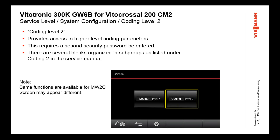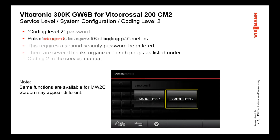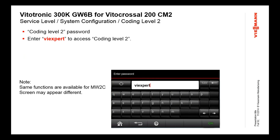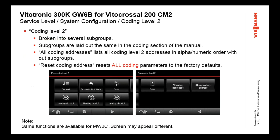To get to coding level two, as soon as you click that button, you're prompted for a new password level. The password for coding two is 'vi expert' — again, all lowercase. You could change that password, but again we don't recommend it. This way the passwords ship from the factory as set, and it's easy for tech support to help you get that number back if you forget. Once you've entered 'vi expert,' you get the same functionality — all coding addresses, including all codes from coding one, and a reset option that resets coding two.